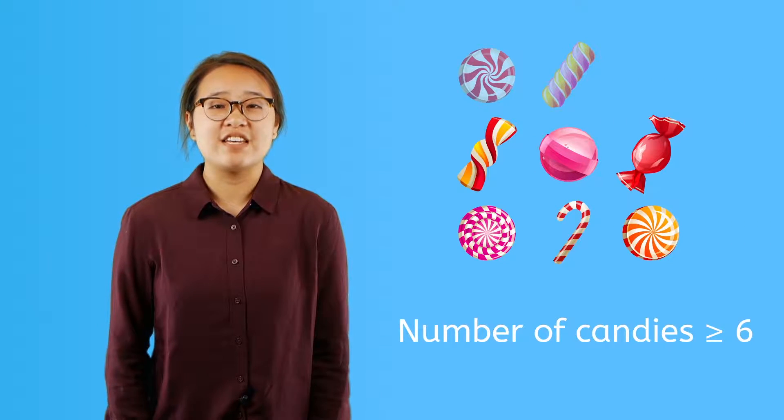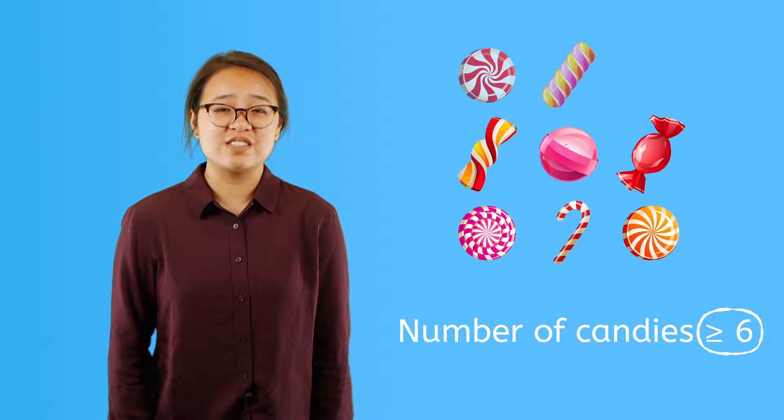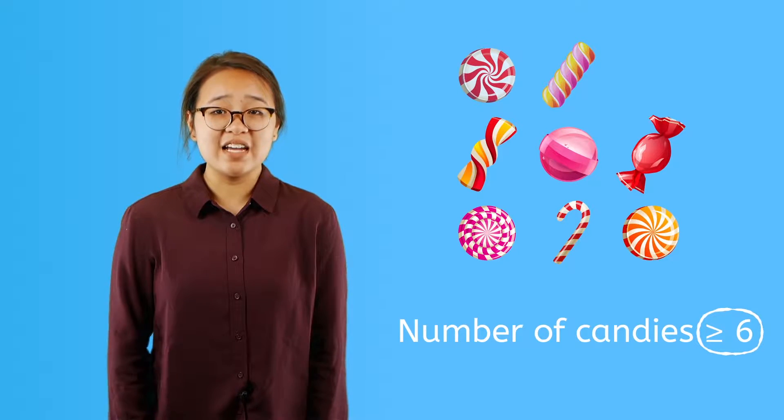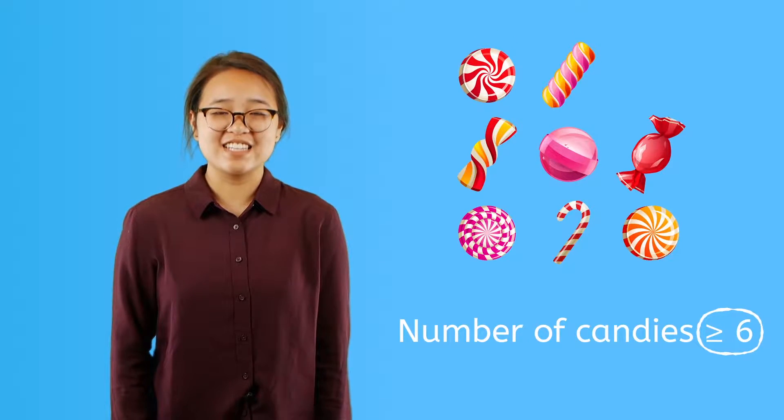Sometimes a number can be greater than or equal to another value. For example, if you start with 6 candies in your pocket and your friend has some candy too, but he may or may not share them with you, how many candies do you have? The number of candies you have is greater than or equal to 6. You have 6 for sure because they're yours, and your friend might share some of his with you. If he does, then you'll have more, or greater than 6 candies. The symbol for greater than or equal to is a combination of the greater than sign and the equal sign right below it.